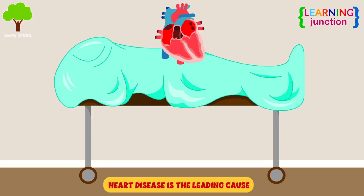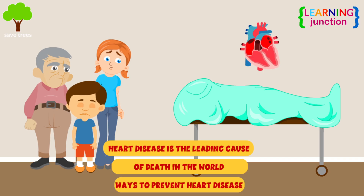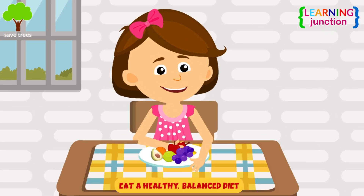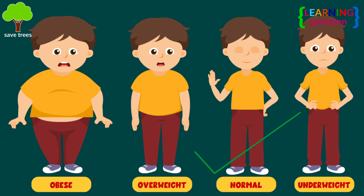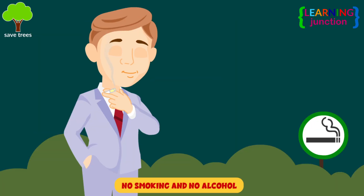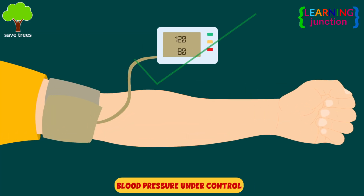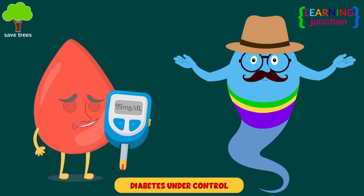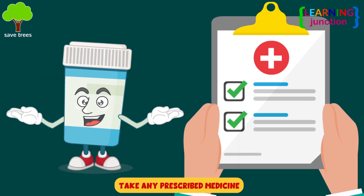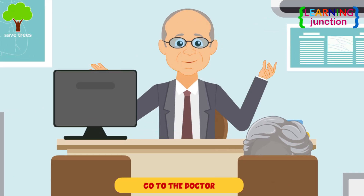Heart disease is the leading cause of death in the world, but there are ways to prevent and manage many types of heart disease. Eat a healthy, balanced diet. Be more physically active. Keep to a healthy weight. Give up smoking and reduce your alcohol consumption. Keep your blood pressure under control. Keep your diabetes under control. Take any prescribed medications. Do not hesitate to go to the doctor if you experience any difficulty.